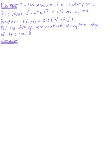The temperature of a circular plate, defined as R, is equal to the set of all points xy where x squared plus y squared is less than or equal to 1. This is defined by the function T of xy is equal to 100 times x squared plus 2y squared.